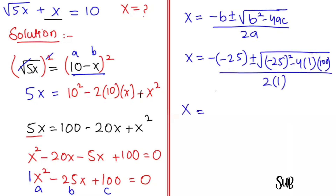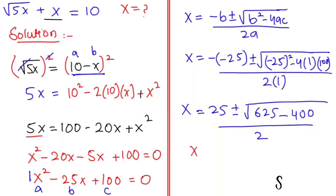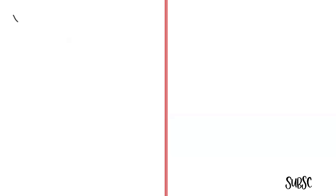So x equals 25 plus or minus root(625 minus 400) over 2. That gives us x equals 25 plus or minus root(225) over 2. The square root of 225 is 15, so x equals 25 plus or minus 15 over 2.